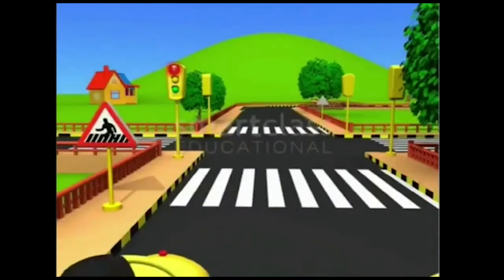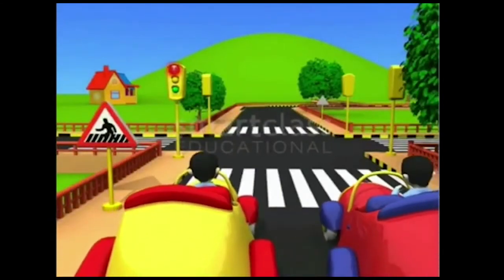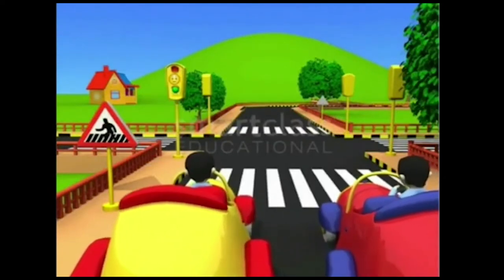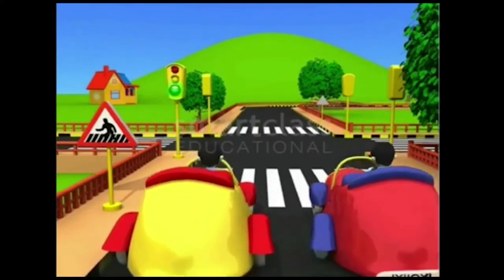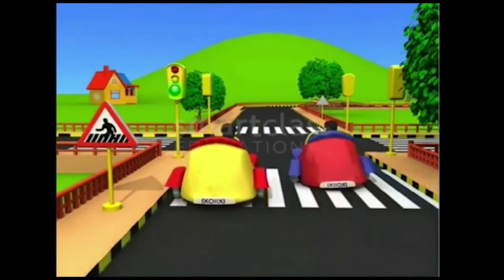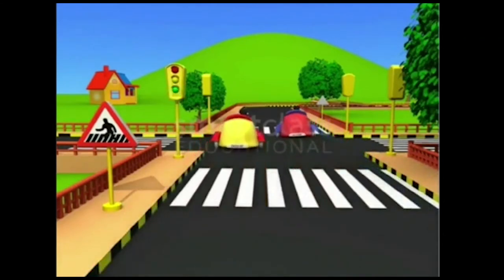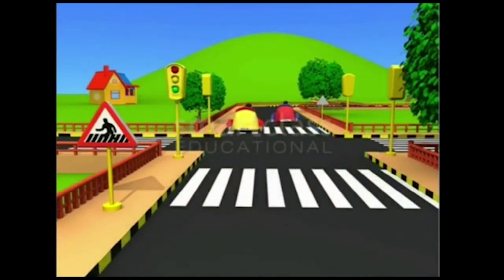The red signal means that vehicles must stop. The yellow signal means that vehicles need to get ready to move, and the green signal means vehicles can move now. Always observe these signals carefully — they help to monitor the movement of vehicles on the road.